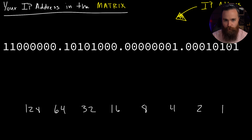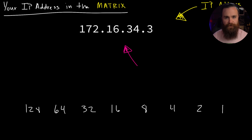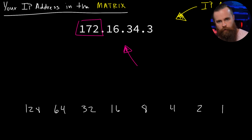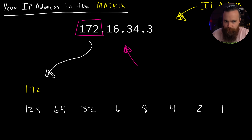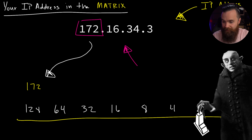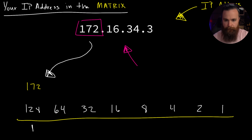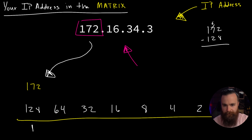Now let's switch it up and do it in reverse. Let's take an IP address in decimal format and convert it to Matrix code - to binary. With the same chart, it's easy. Here's our IP address in decimal format. Let's start with the first octet: 172. We'll bring 172 next to 128 and ask: can we take 128 away from 172? Yes, we can - so 128 is on. Now 172 minus 128 leaves us 44.